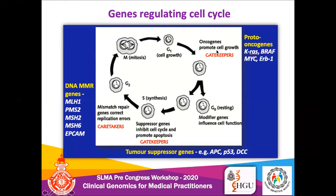If there are mutations in these important genes, it can affect the cell cycle and cell division process and sometimes lead to uncontrolled cell division and proliferation, resulting in cancer. If proto-oncogenes are mutated, they become oncogenes, causing uncontrolled cell proliferation. If tumor suppressor genes are mutated, they lose their function and fail to suppress the cell cycle. And if mismatch repair genes are mutated, errors accumulate during DNA replication, which can also lead to disastrous consequences.